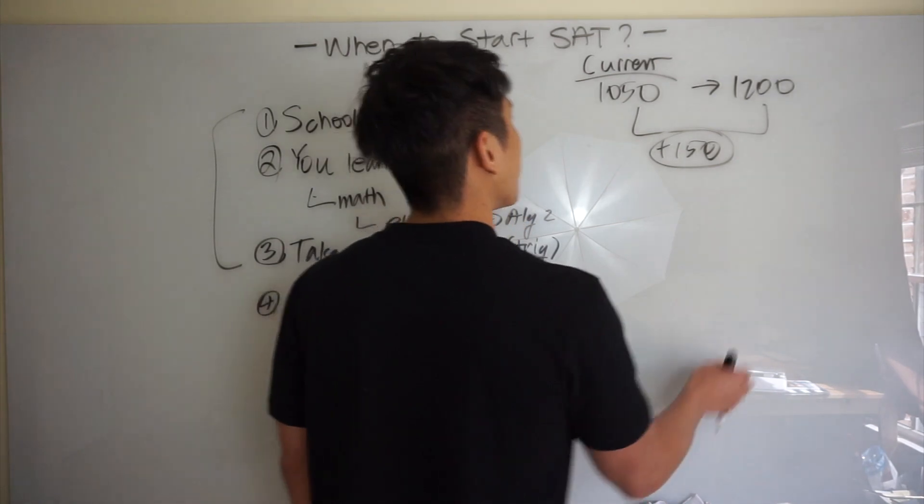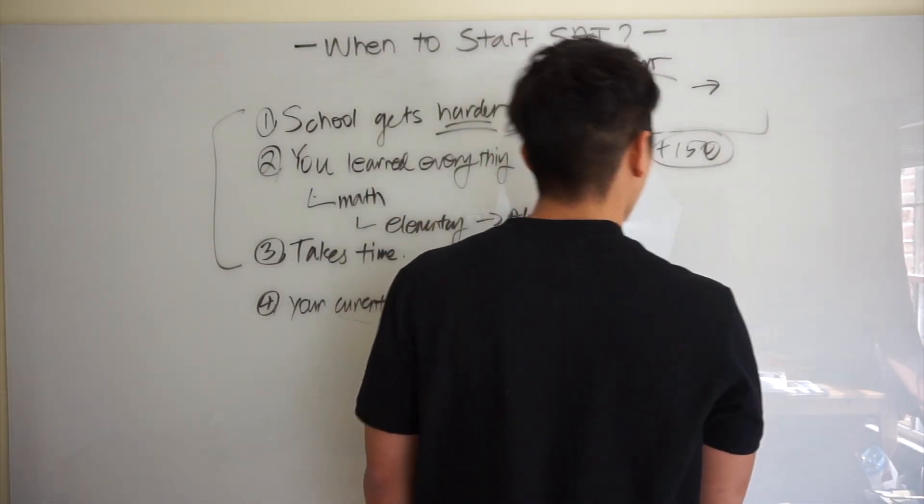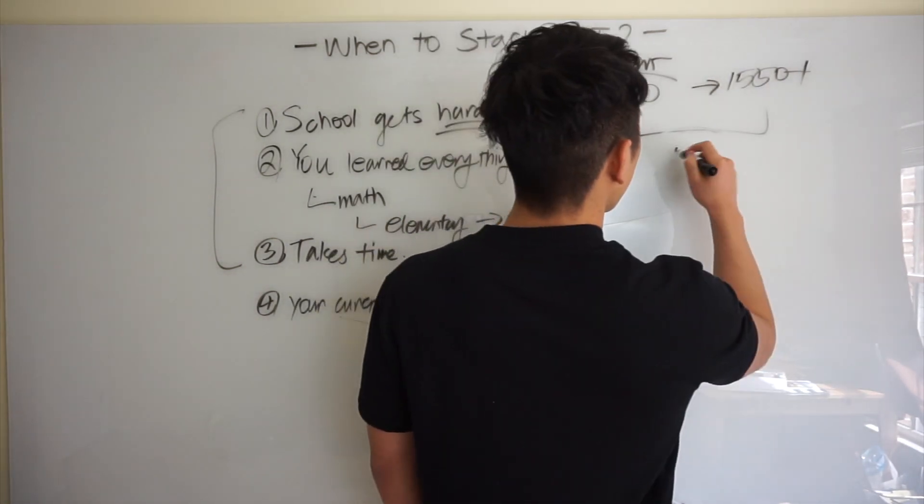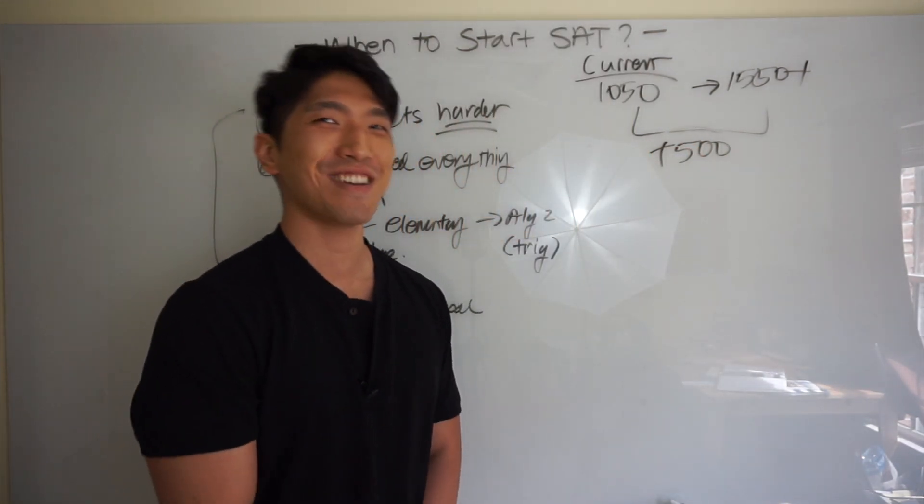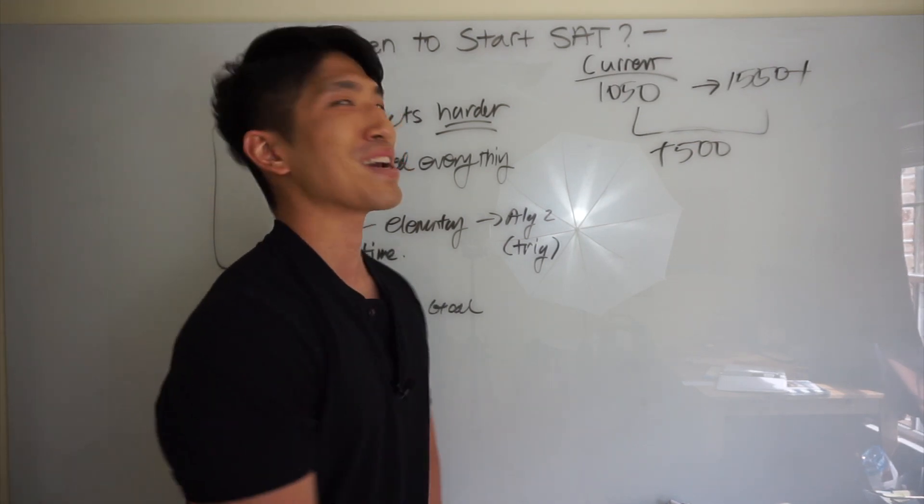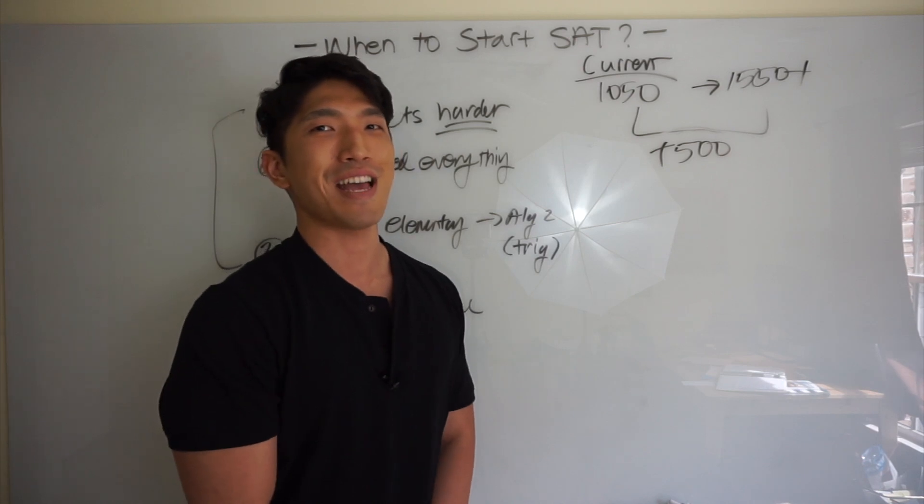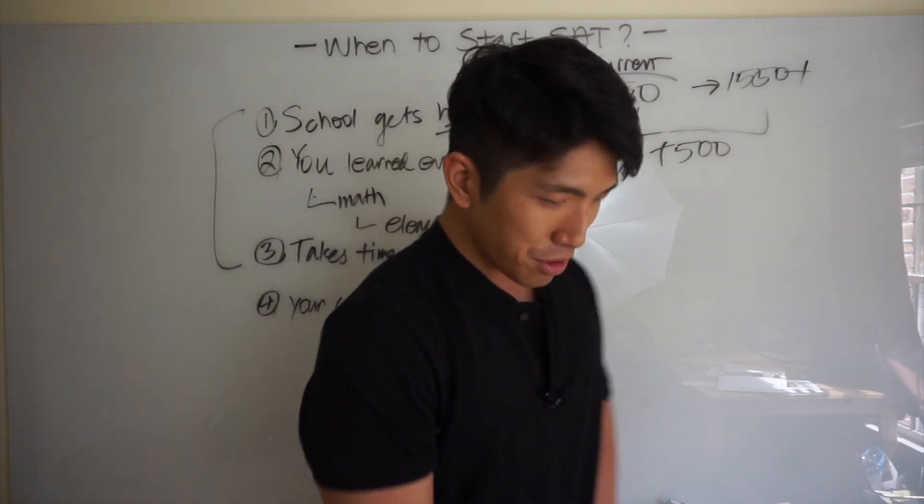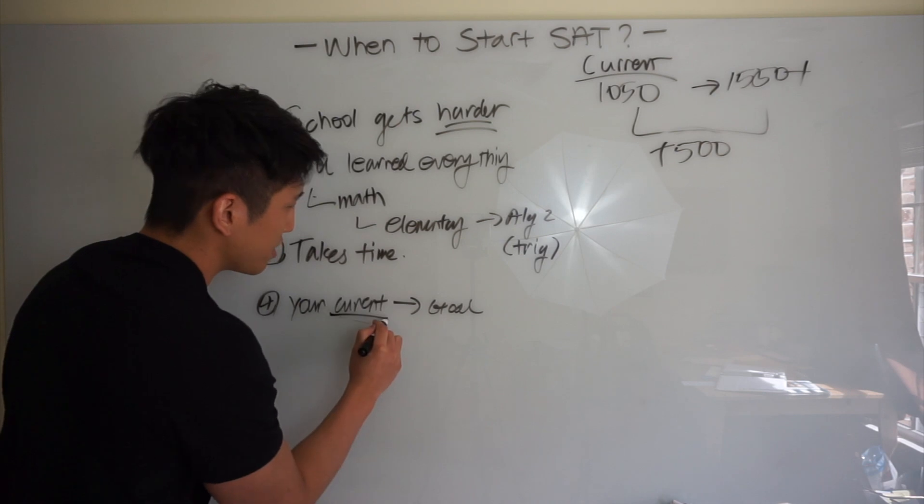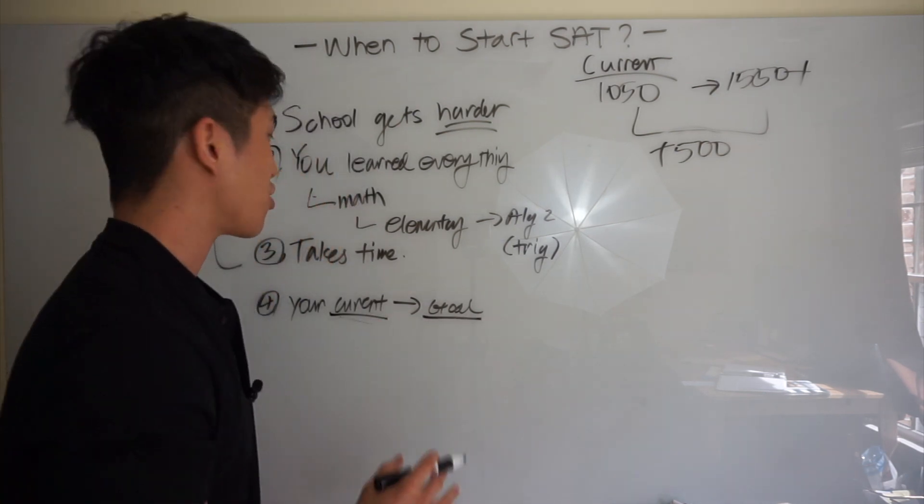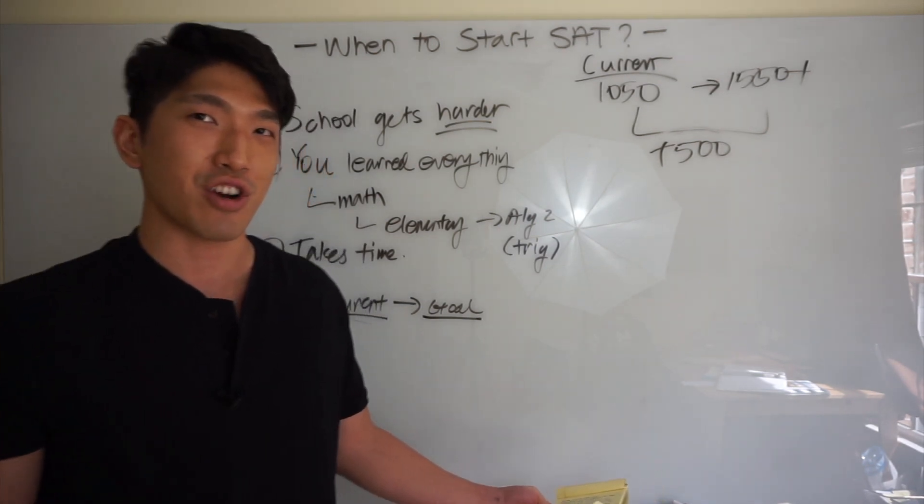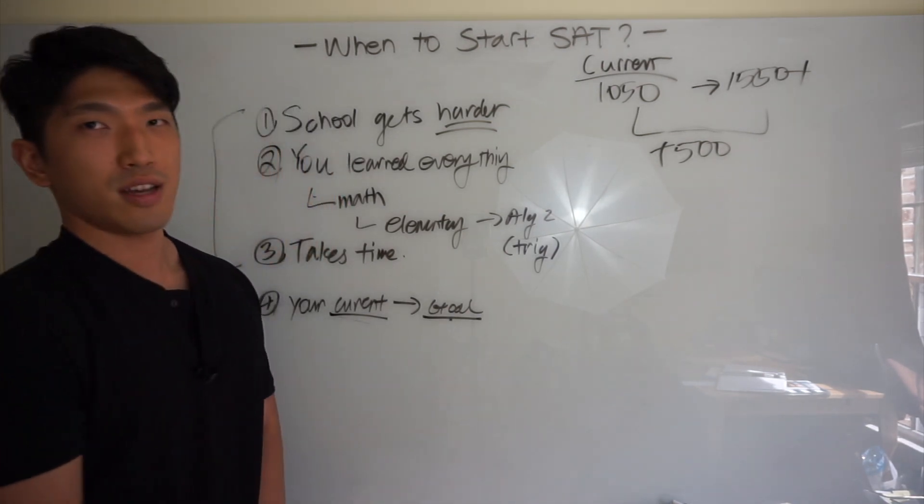But let's say I am trying to go to Harvard and Harvard requires about 1550 plus score. That's going to be about 500 points that I need to raise. That's a lot of points. That's not something I can raise overnight. It's going to take some time. It's going to take me at least a year or two to raise that much score. That's why you want to get started as soon as possible. Before you think about SAT, make sure you find out what your current score is and where your goal needs to be.